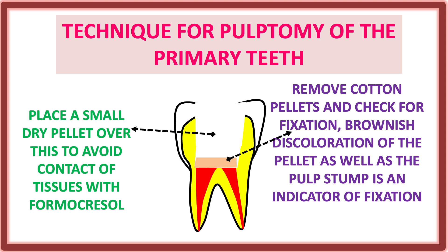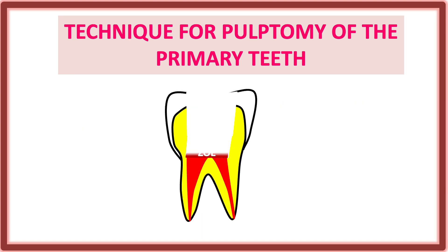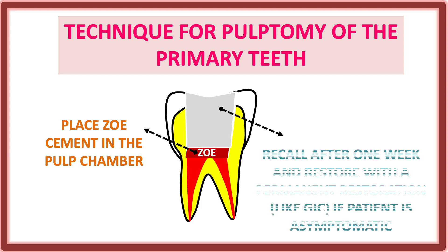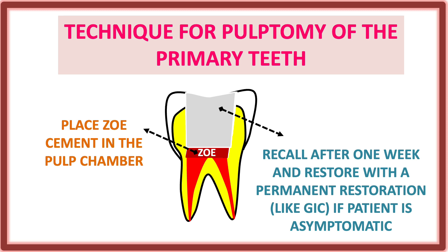Remove the cotton pellet and check for fixation: brownish discoloration of the pellet as well as the pulp stump is an indicator of fixation of the radicular pulp. After confirming brownish discoloration, place ZOE cement in the pulp stump or pulp chamber, then place temporary cement. Recall the patient after one week.